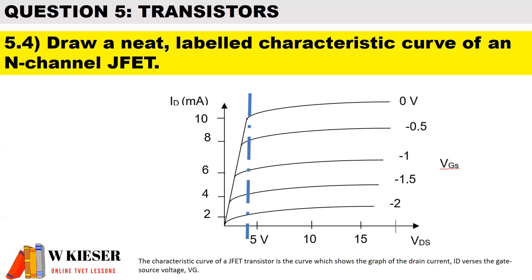The characteristic curve of a JFET transistor is the curve which shows the graph of the drain current ID versus the gate source voltage VGS.